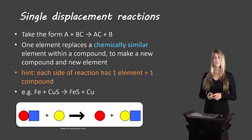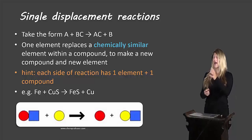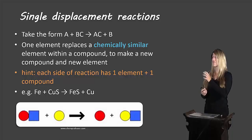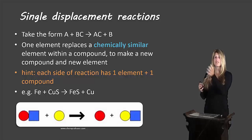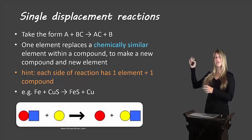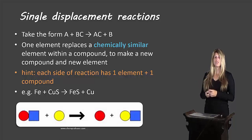Here's an example. We can identify this as a single displacement reaction because iron is an element all on its own, and then we have copper 2 sulfide as a compound. On the other side, iron has taken the place of copper — it's kicked copper out. So copper is now the lonely element by itself, and we have iron 2 sulfide as the new compound.